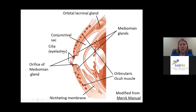We also have eyelashes, also called cilia. There are several important lacrimal glands: the orbital lacrimal gland, which is sort of dorsolateral to the eye, and then we have the gland of the nictitating membrane and the nictitating membrane itself.